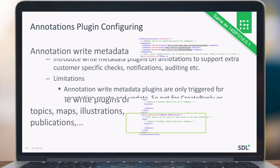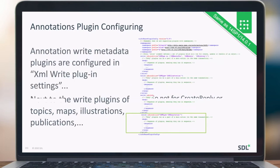To configure the annotation plugin, it's actually in the normal XML write plugin settings. You can see it highlighted there. You have to look for this condition in there, and in that one you can define your sequence of plugins as well — what you want to do when an event happens.